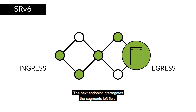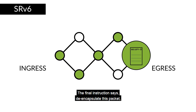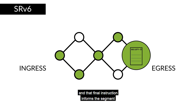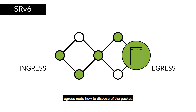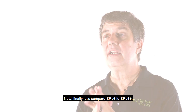The next endpoint interrogates the segments left field. This time, segments left is equal to zero, so we've reached the endpoint. The final instruction says: de-encapsulate this packet, re-expose the initial payload packet that was received by the segment ingress. That final instruction informs the segment egress node how to dispose of the packet.